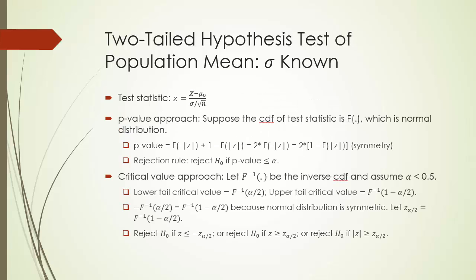Now let's consider the trickier case of two-tailed test of a population mean. The rejection rules remain the same whether we use p-value approach or critical value approach. The difference is the way we compute p-value and critical value. If you are comfortable with interval estimation, it should be easy. Interval estimation is always two-tailed, because we always cut out both upper and lower tails in a symmetric way. In two-tailed hypothesis test, it is the same. So the p-value in a two-tailed test will simply be twice the p-value in its corresponding one-tailed test. While computing the critical values, we replace alpha with alpha over 2.